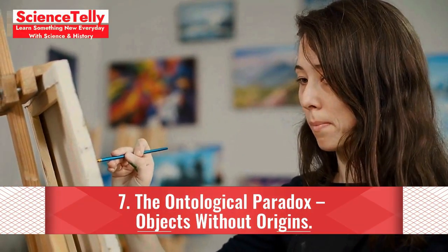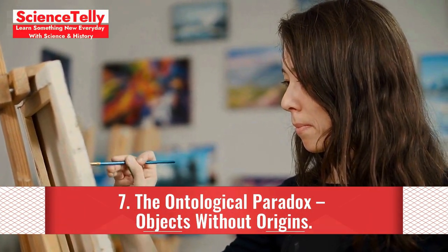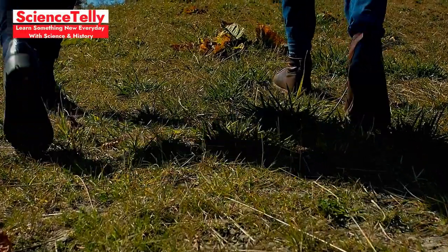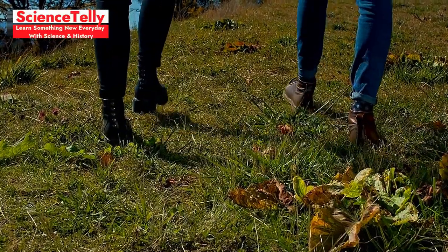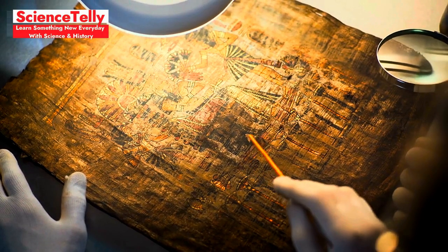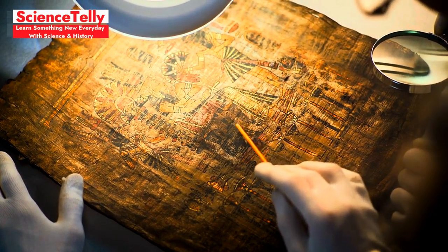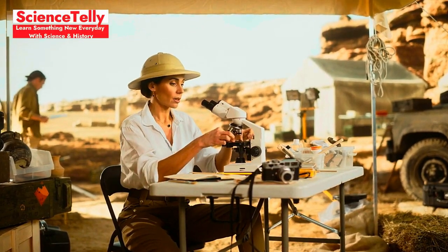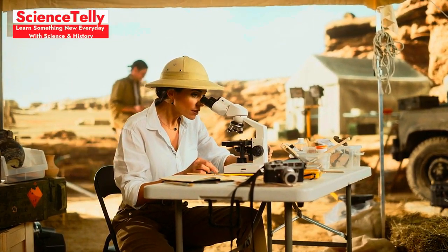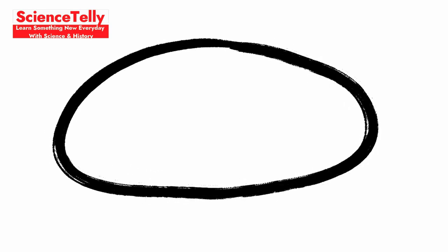Seven, the ontological paradox, objects without origins. Similar to the bootstrap paradox, the ontological paradox involves objects that seem to appear from nowhere. Imagine a time traveler who finds a valuable artifact in the future and brings it to the past. The artifact circulates through generations until it reaches the future, where the time traveler finds it again. This loop of existence, without a clear origin, challenges our understanding of creation and originality, making us wonder if some things simply exist without a beginning.